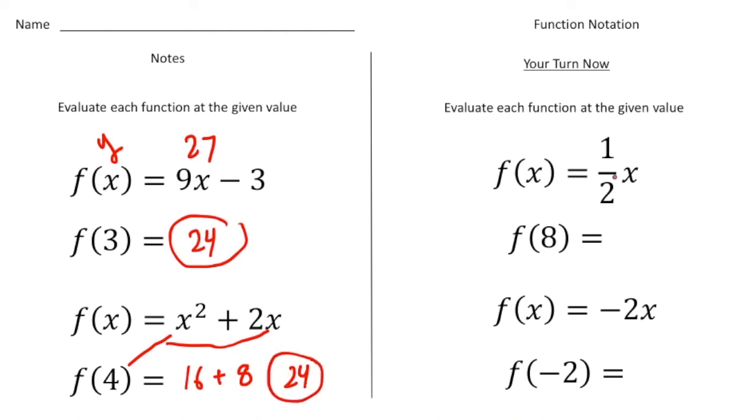Alright, this one we have f of x equals 1 half x. And I want to know what's f of 8. So when I substitute the 8 in for the x, 1 half times 8 will give me 4 for that one.